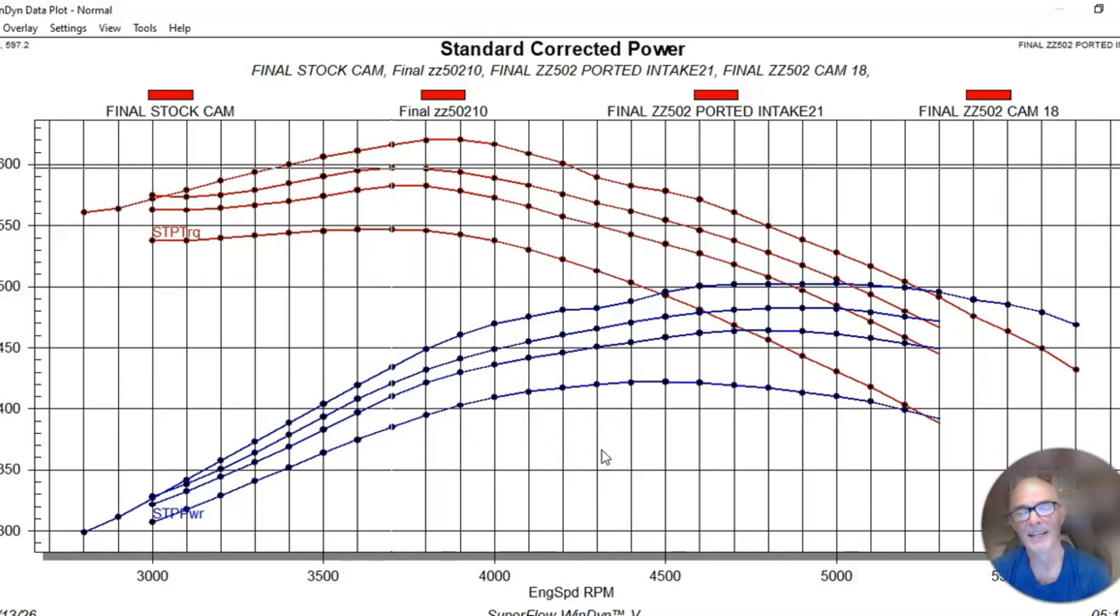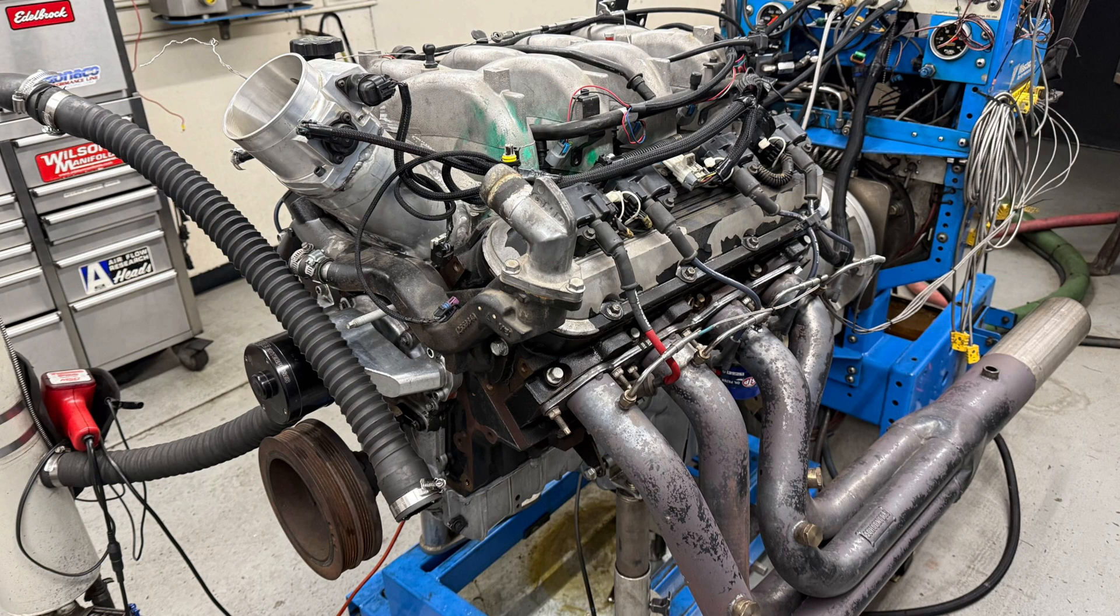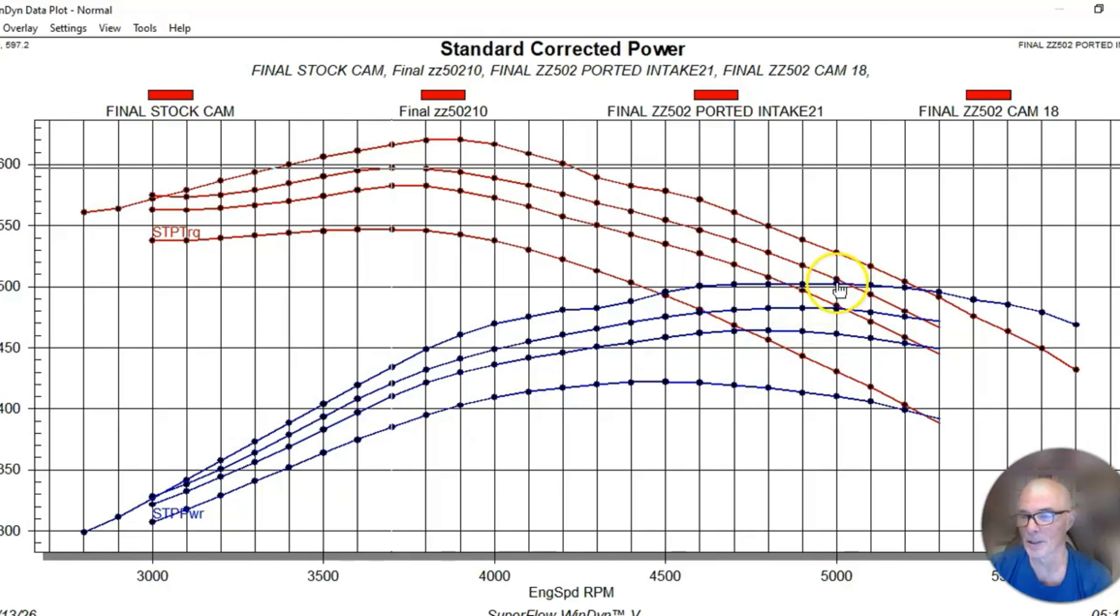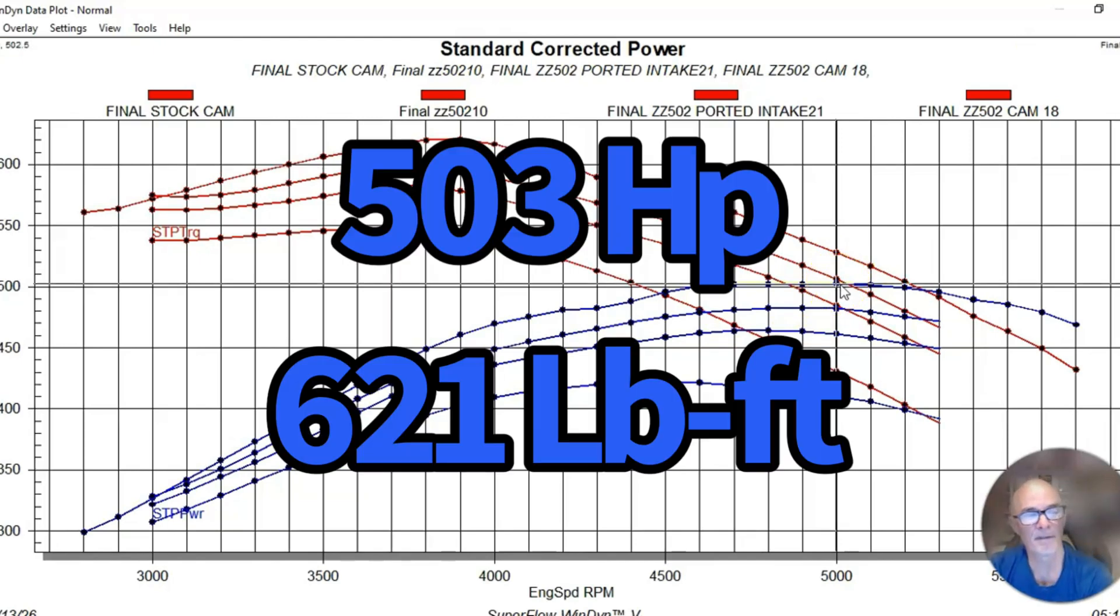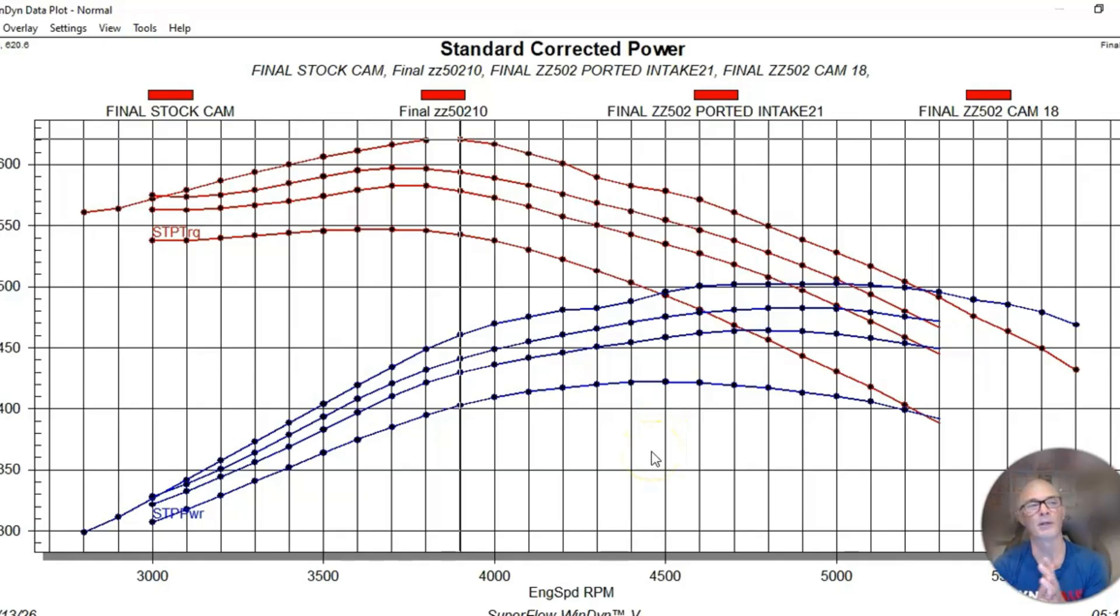We took the motor after running that test, set it in the storage area, came back and put it back up on the dyno. This time when we re-ran it, we wanted to re-establish our baseline. We thought it would make the same power, but instead it made 503 horsepower and 621 foot pounds of torque.